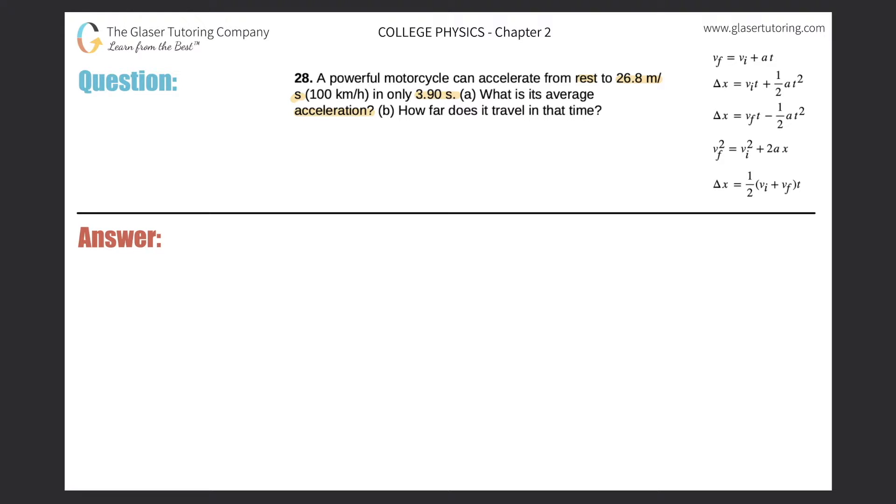Alright, let's draw a quick sketch. Here's the motorcycle. We'll just represent it as a dot. And it's going to start as it said at rest, so the initial velocity is 0 meters per second. And it says eventually it's going to reach a velocity of 26.8.